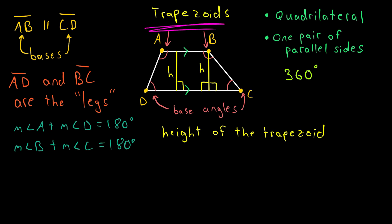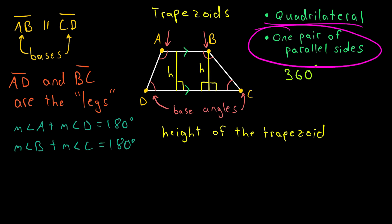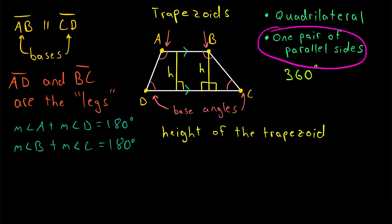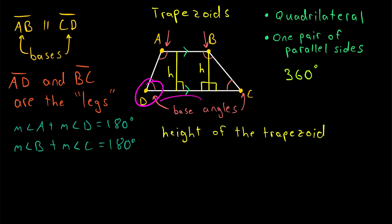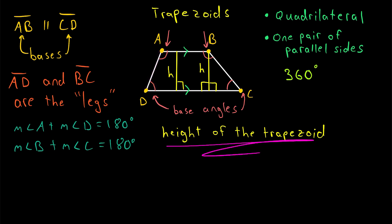Quick recap: a trapezoid is a quadrilateral with exactly one pair of parallel sides using the exclusive definition, which excludes parallelograms. Those two parallel sides are called the bases, and two angles adjacent to the same base are called base angles. The other two non-parallel sides are called the legs. The sum of two angles on the same leg is 180 degrees, and the height of the trapezoid is the perpendicular distance between the two bases.